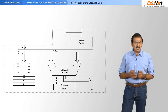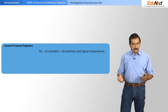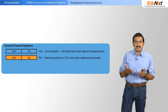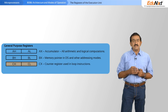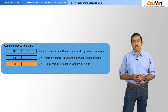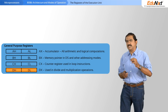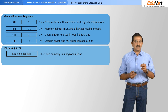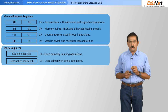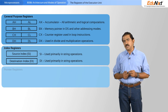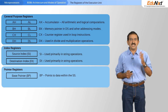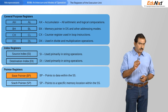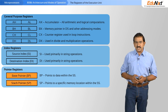The execution unit consists of several general purpose registers. The AX register is the accumulator, made up of AL and AH, each an 8-bit register. The BX register is the memory pointer into the data segment. The CX register is a counter register, and the DX register is used specifically for divide and multiplication operations. There are also two index registers — the source index and destination index registers, used for string operations. Additionally there are pointer registers: the base pointer points to data within the stack segment, while the stack pointer points to the top of the stack.